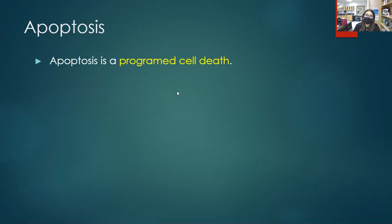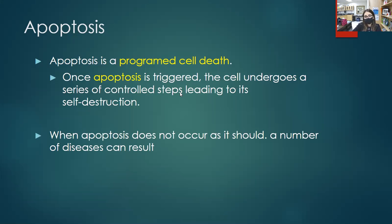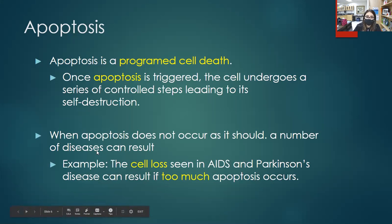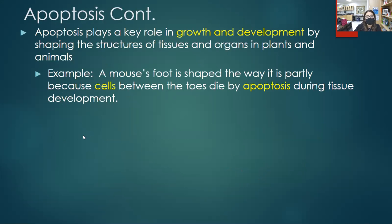Apoptosis is programmed cell death — essentially the cell will self-destruct. If apoptosis does not occur as it should, the results can be negative. An example of apoptosis occurring when it shouldn't: cell loss seen in AIDS and Parkinson's disease patients can result in too much apoptosis, so we lose too many nerve cells or lose the immune system completely. But apoptosis isn't just bad — it's actually quite good and helps us in development.